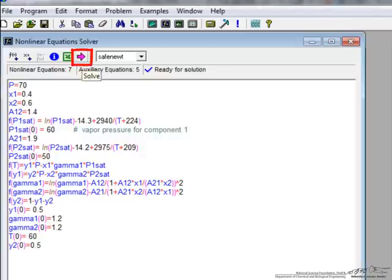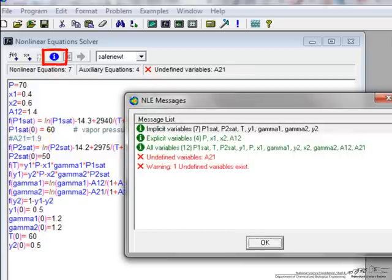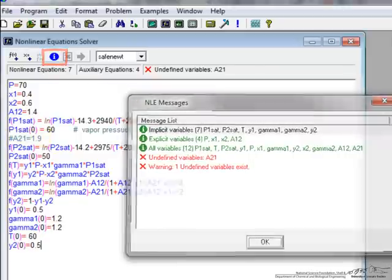You notice the solve arrow becomes pink, indicating we are ready to solve. If I were to leave something out, let's say in the easiest way, if I put a number sign, it's going to interpret this as just a comment. I hit the information saying there's this undefined variable, A21, so it won't be able to solve the equation.